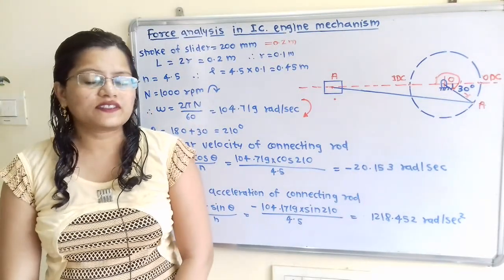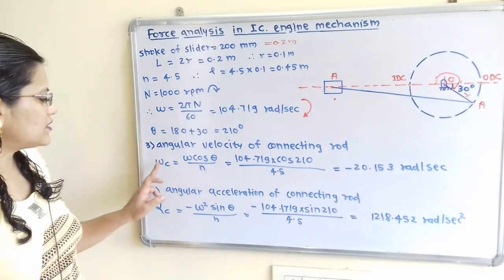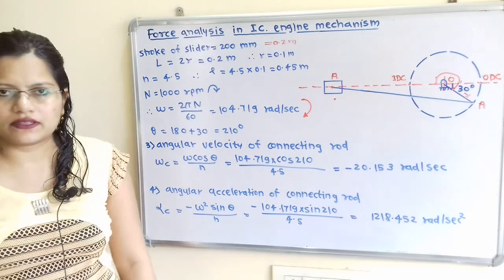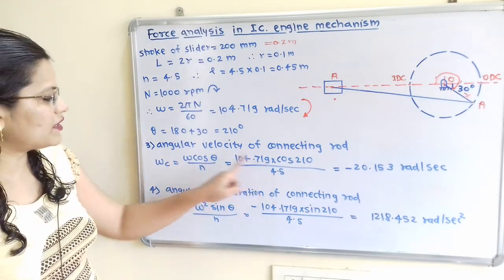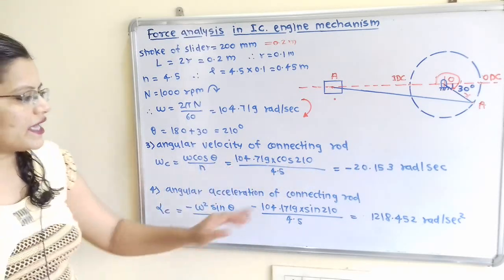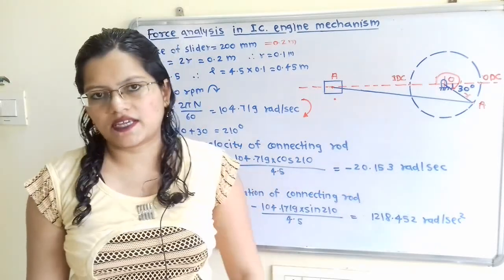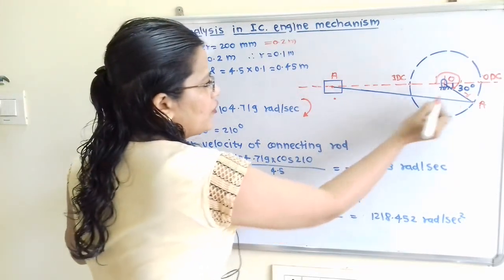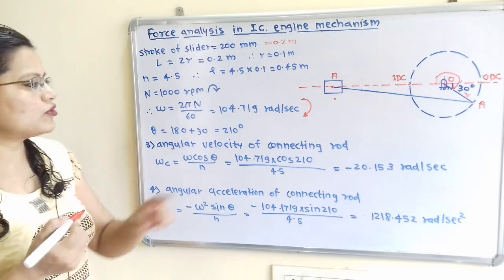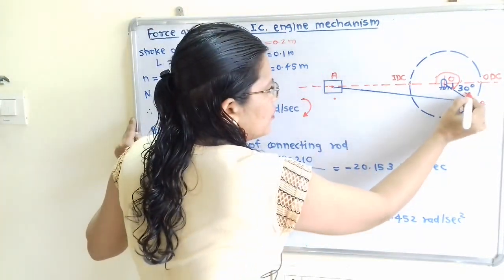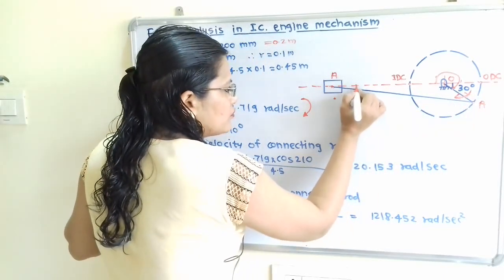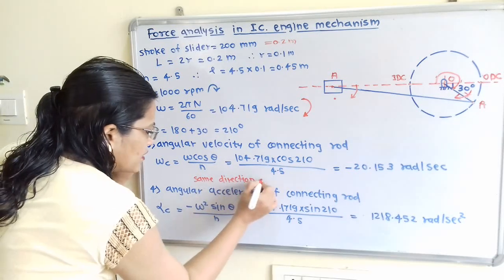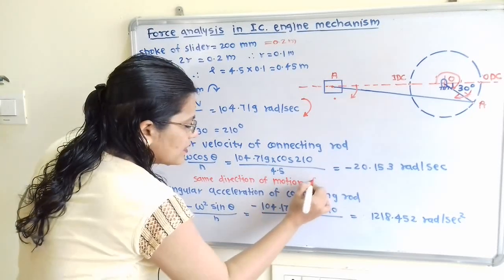For angular velocity of connecting rod: omega_C = omega·cos theta / N = 104.719 × cos 210° / 4.5 = -20.153 rad/s. The negative sign indicates that the direction of motion of the connecting rod is the same as that of the crank, which is clockwise.